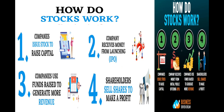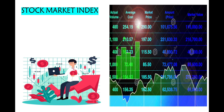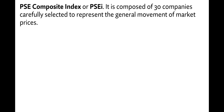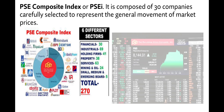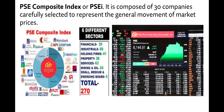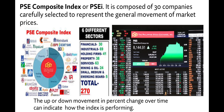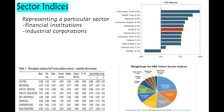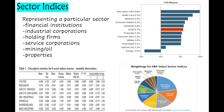Now, how to buy and sell shares? This is through the stock market index. A stock market index is a measure of a portion of the stock market. One example of this is the PSE Composite Index or the PSEI. It is composed of 30 companies carefully selected to represent the general movement of market prices. The up or down movement in percent changes over time can indicate how the index is performing. Another type are the sector indices, representing a particular sector like financial institutions, industrial corporations, holding firms, service corporations, mining, and oil. Then we have the properties.